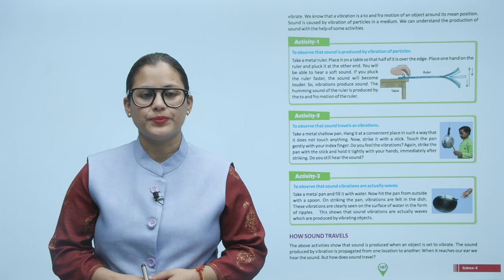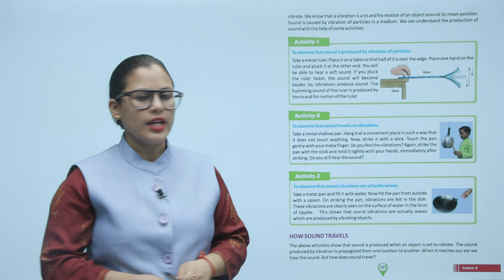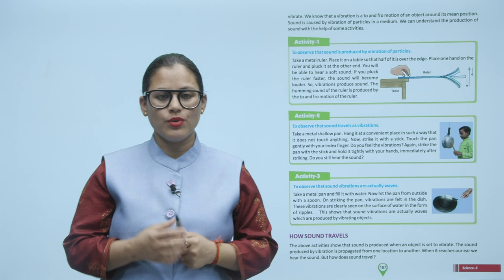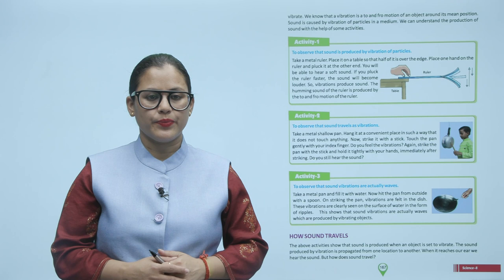Aapko ek metal ruler lena hai, table pe rakhna hai is tarah se ki uska jo half edge hai sirf half hi cover kare, baaki bahar rakhen. Ek hand place kar dena aur doosri side se usko pluck karna hai. Aap dekhenge ki aapko ek soft sound sunai dega. Uske baad isko faster pluck karenge toh sound aur louder ho jaegi. Iska matlab jo vibrations hain woh sound ko produce kar rahe hain.